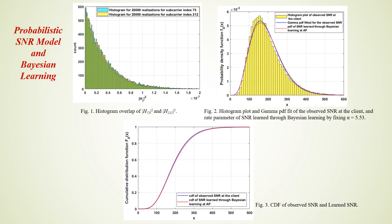Figure 1 shows the histogram of channel gains at randomly chosen subcarrier indices 75 and 212. From the figure it is clear that the channel gains are exponentially distributed. We found the empirical distribution of observed packet SNR at the receiver to match a gamma distribution closely.